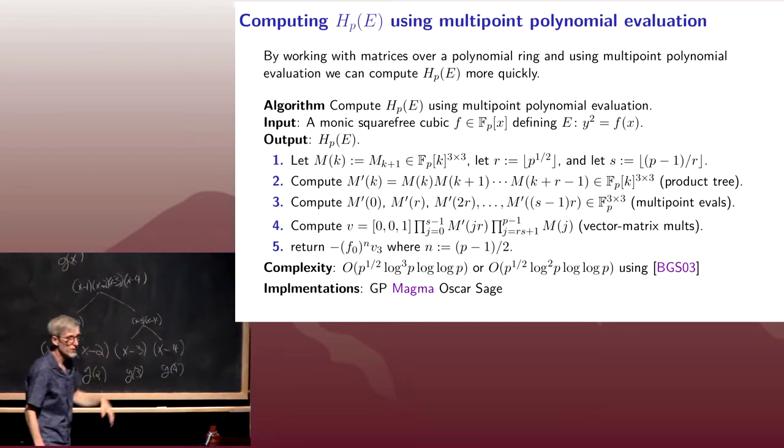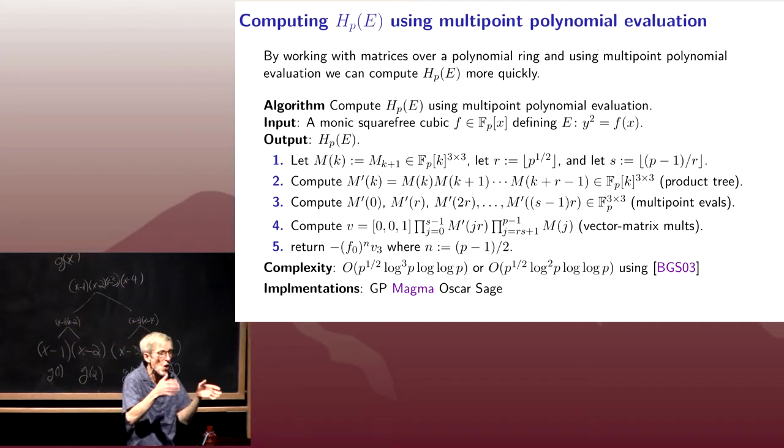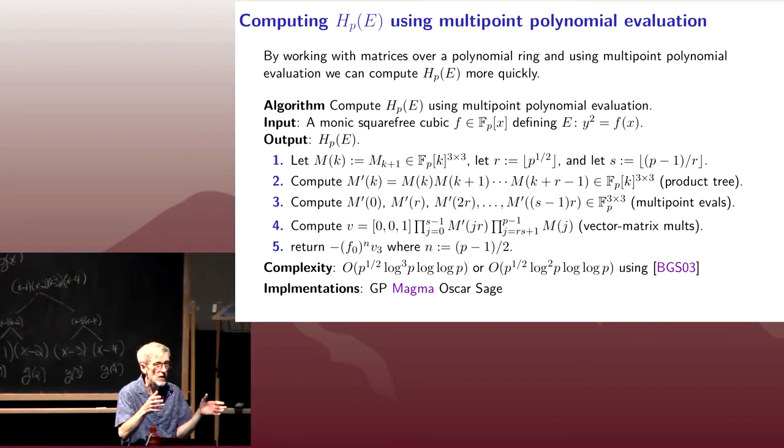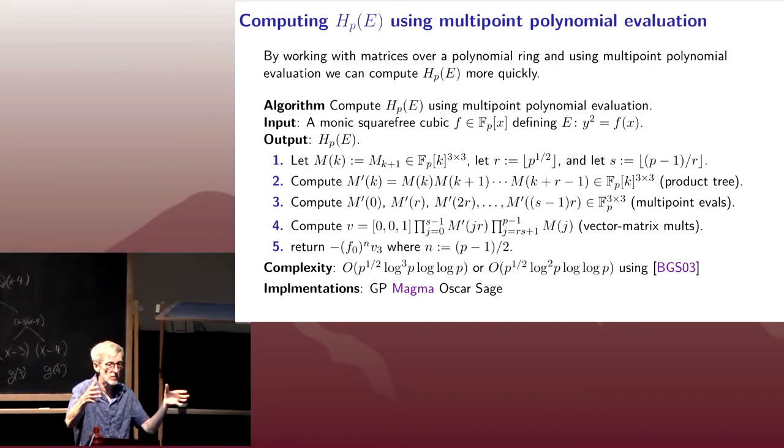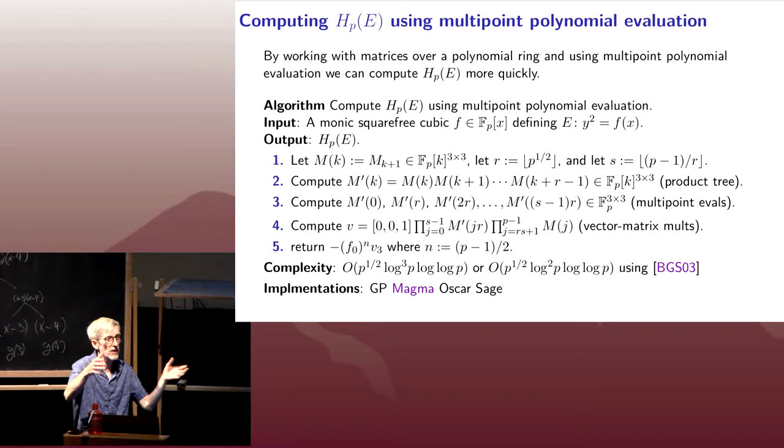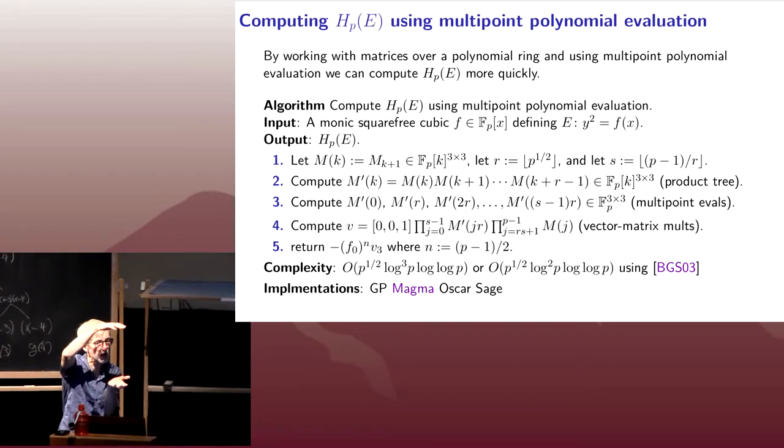At each layer of the product tree, we had something like square root of p log p bits of information. And when we do multiplication with something times log something bits in it, we're going to get a log squared. And then we have log layers in the tree which gives us a log cubed.